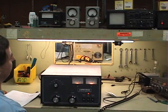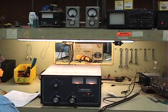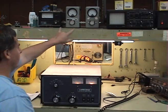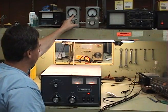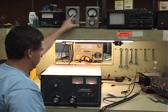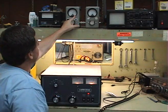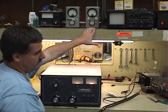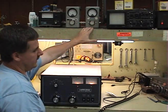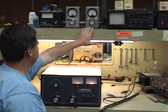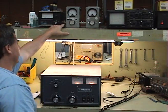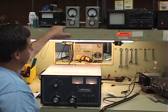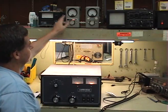And notice our watt meters, how far they come over. They're coming over to like 700 watts here. And they both agree with each other here. One is just a Model 43 bird meter that has no peak reading circuit to it. The other meter is a bird meter that has a peak meter in it.